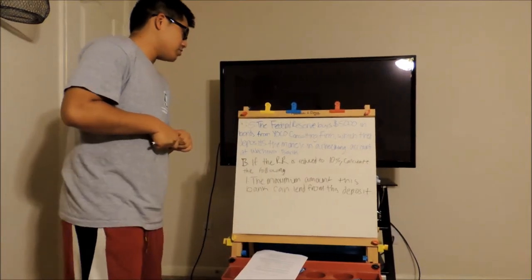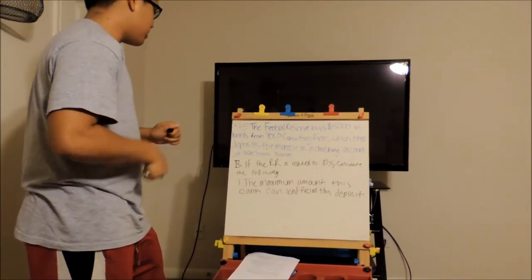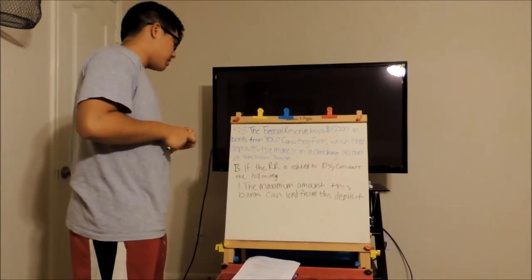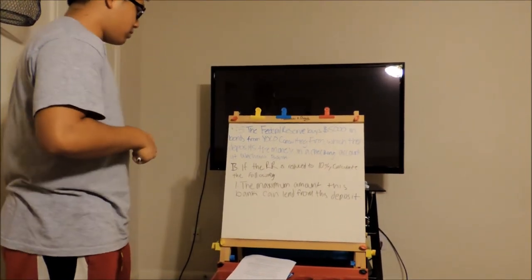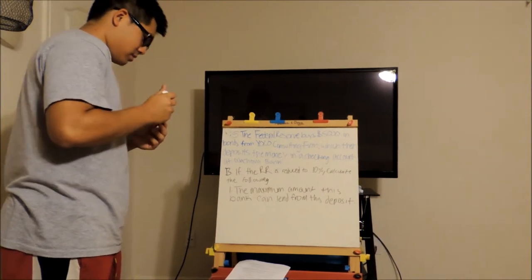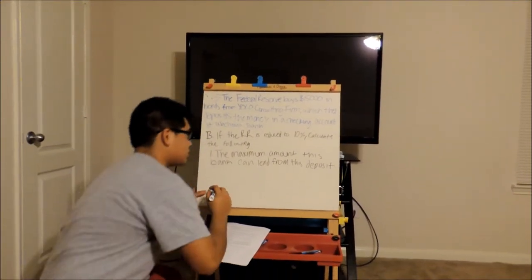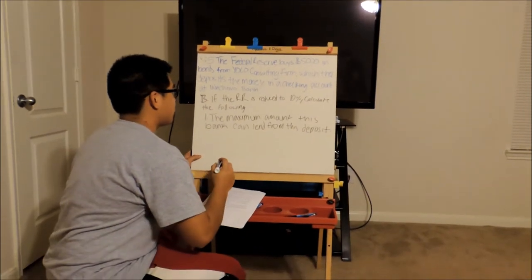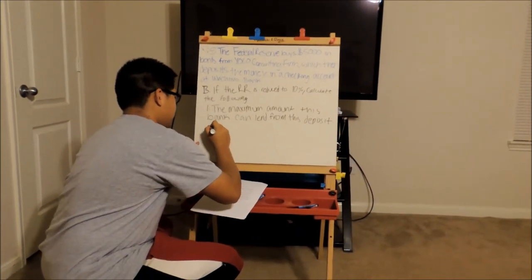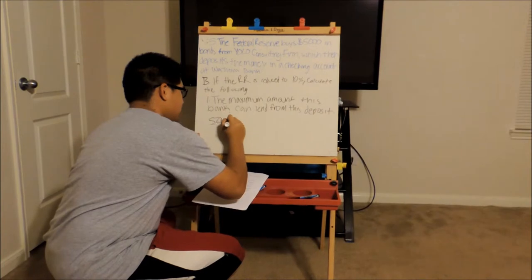The reserve ratio is reduced to 10%. Calculate the following. Number one: the maximum amount this bank can lend from this deposit. So what you would do is you multiply your new reserve ratio to your demand deposit, which is $5,000. So it would be $5,000 times 0.10...